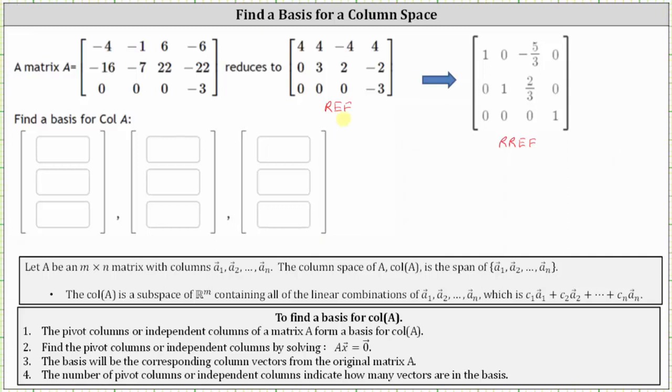Notice in row echelon form, as well as reduced row echelon form, we have a pivot in row one column one, row two column two, and row three column four. This indicates the pivot columns or independent columns are column one, column two, and column three from the original matrix A.